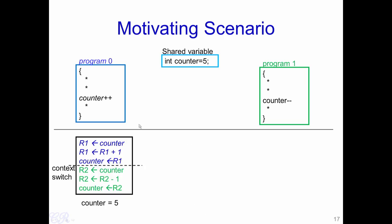Let us look more deeply into how these instructions execute — specifically what happens at the assembly level when we do counter++. First, the value of counter stored in memory is loaded into a register R1. Then R1 is incremented by 1: R1 = R1 + 1. Then R1 is written back into the memory location for counter. In terms of numbers: counter contains 5, which is loaded into R1; R1 is incremented to 6; and 6 is written back into counter.